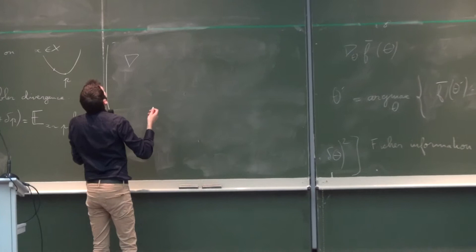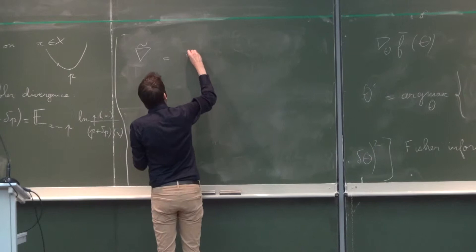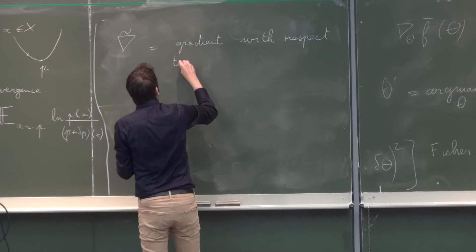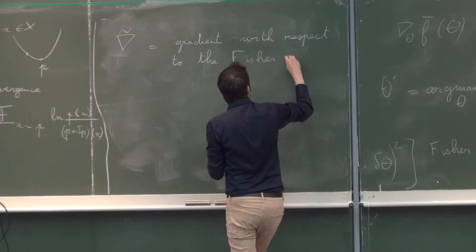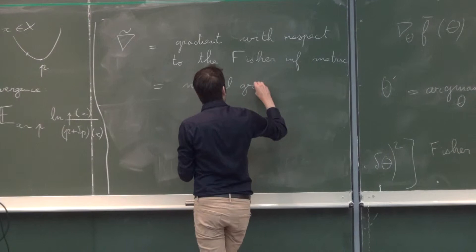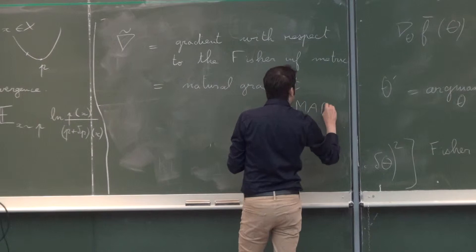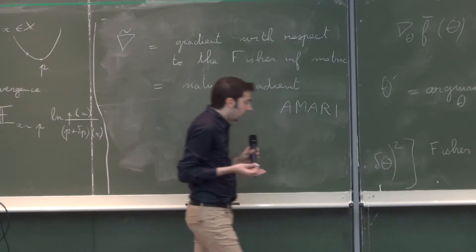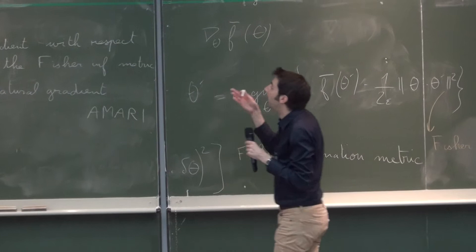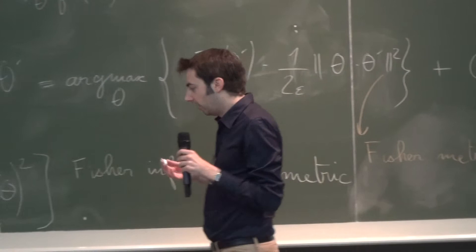You can replace the standard gradient with the gradient with respect to the Fisher information metric. I will denote by theta-tilde this gradient with respect to the Fisher information metric — this is the natural gradient, so called. Here I must mention the name of Shun-ichi Amari, because he was really the one to advocate the use of the natural gradient and to prove many important properties of it, especially in the learning context. He proved that using the natural gradient leads to optimal variance for the estimates of theta in some situations.